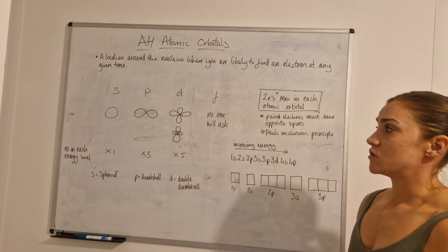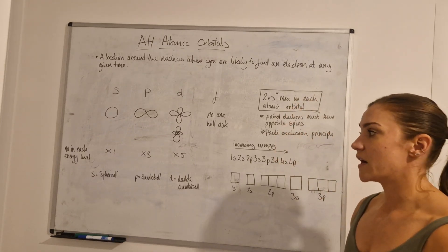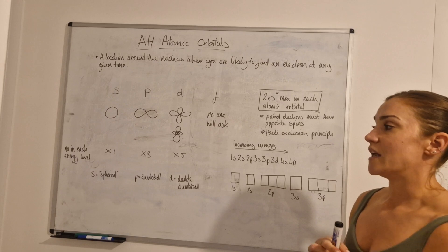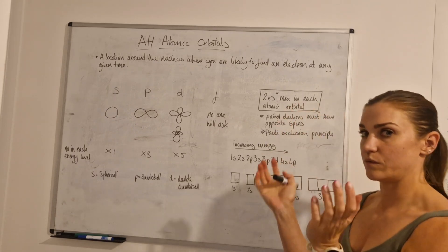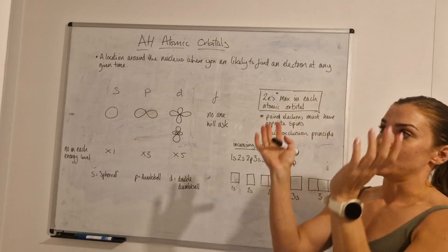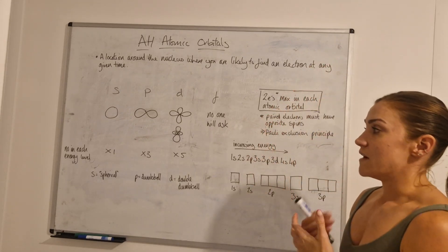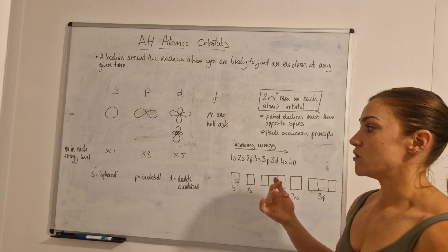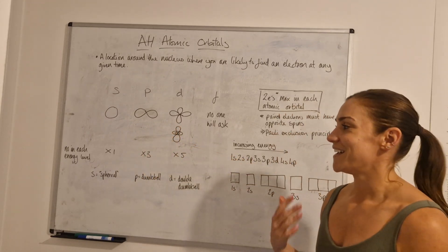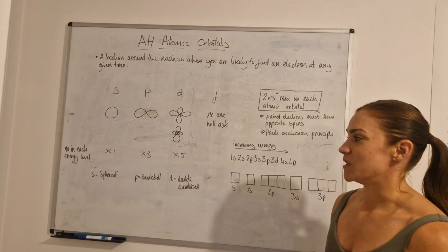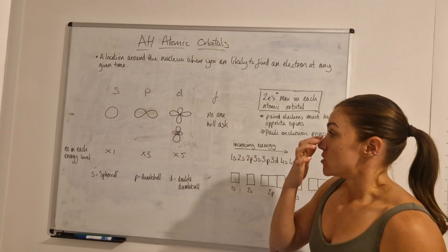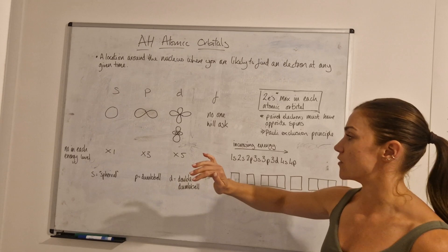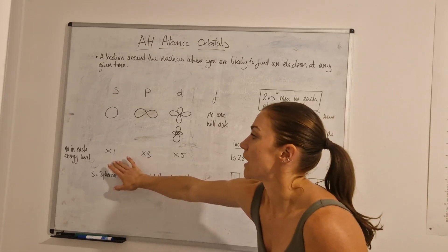The S orbitals are the most simple ones. They are a spherical shape, so I remember that because they're S for spherical. They're just shaped as a sphere, and in every energy level you will get one S atomic orbital. Then we move on to the P orbitals. They're dumbbell shaped, and there are three of them in every energy level apart from the first energy level. In the first energy level you only get an S.